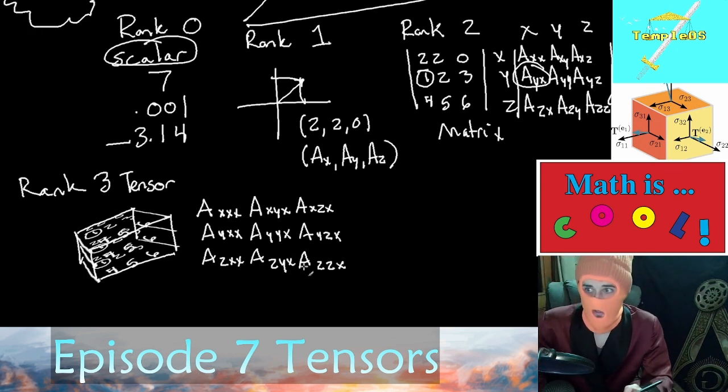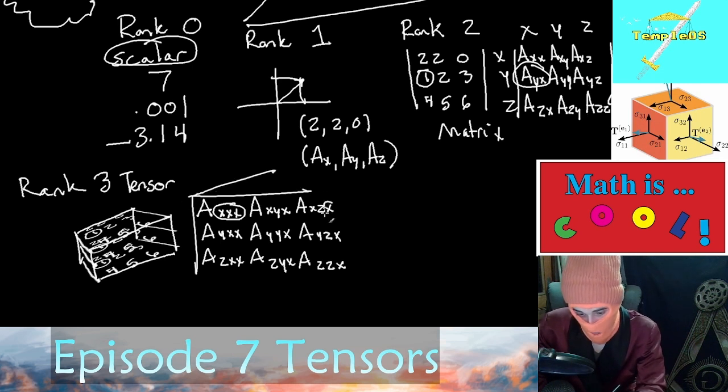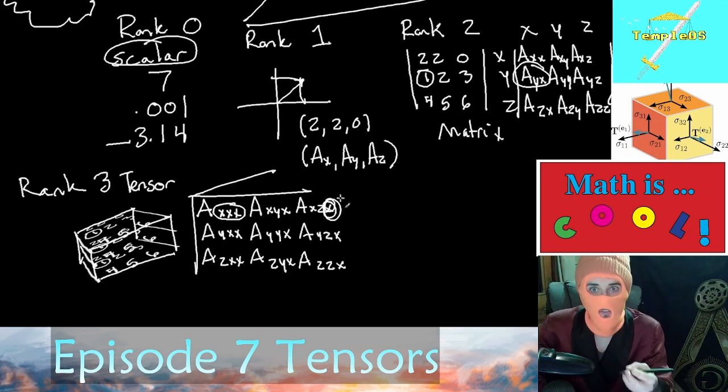With our rank three tensor, we actually have three units which we have to consider to access any particular data point. That's because now our matrix extends into a z direction, which would be this third value. If you're still having a hard time understanding it, you can think of a rank three tensor as an array of matrices.